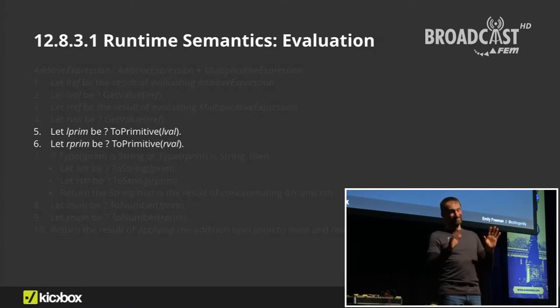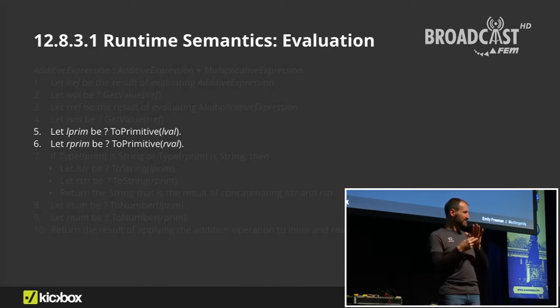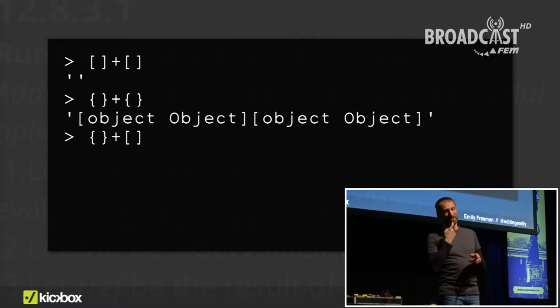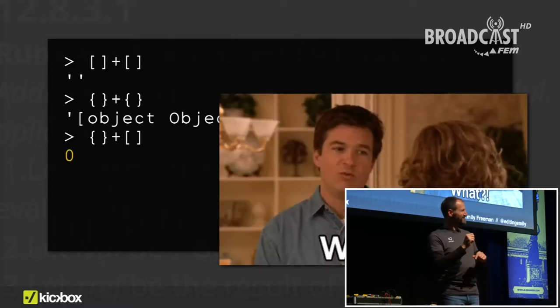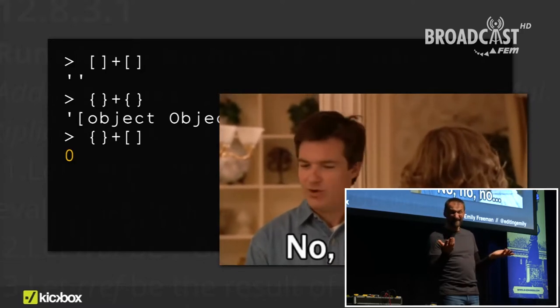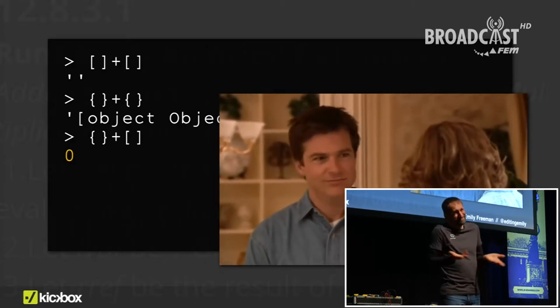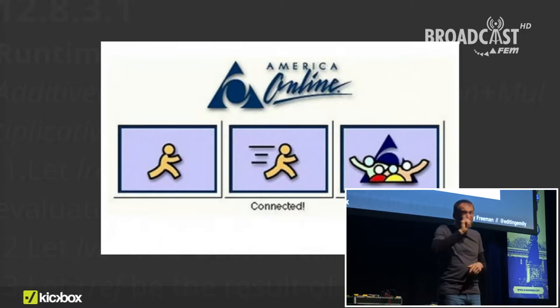Both of these are actually caused by the ToPrimitive method when it's called when the plus operator is being evaluated. As you probably know, there are only five primitives in JavaScript, and in this case string wins out. As insane as some of those examples are — and they're very funny — I'm incredibly grateful that JavaScript handles all this logic under the hood for us, because if we had to think like that every day, the internet would probably still look like this, and we would definitely all quit our jobs.